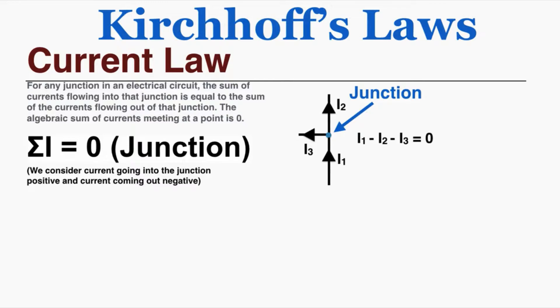The algebraic sum of currents meeting at a point is zero. We write it like this: the sum of the currents I is equal to zero for any junction. We consider current going into the junction to be positive and current going out to be negative.